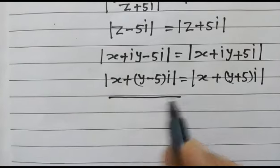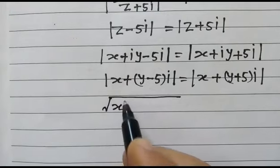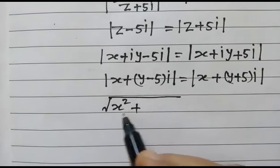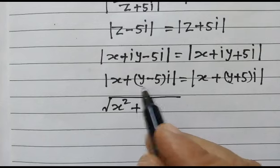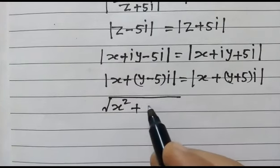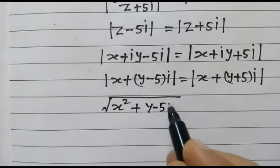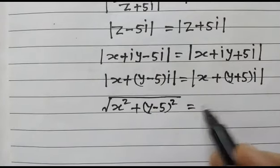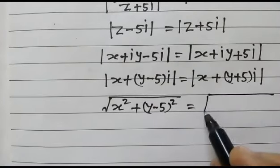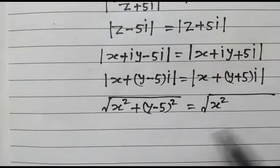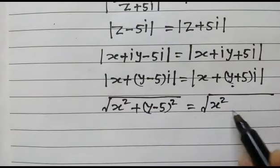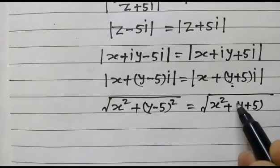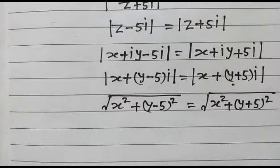So we get: the square root of x squared plus (y minus 5) squared — where x is the real number and (y minus 5) is the imaginary part — is equal to the square root of x squared plus (y plus 5) squared.